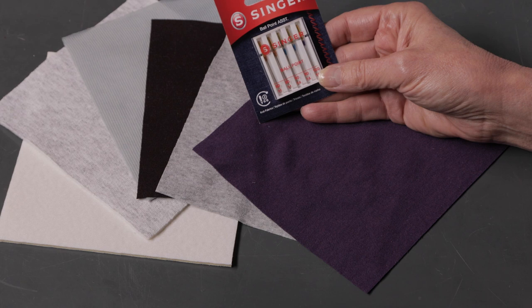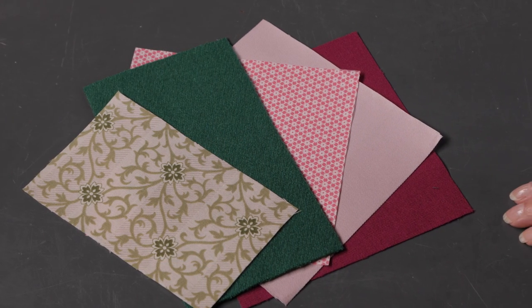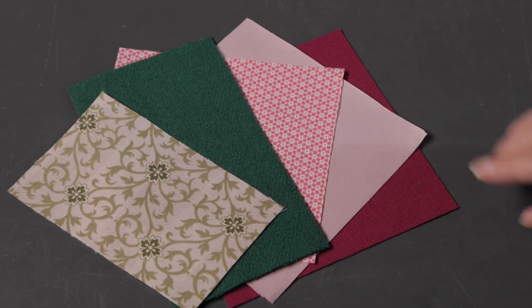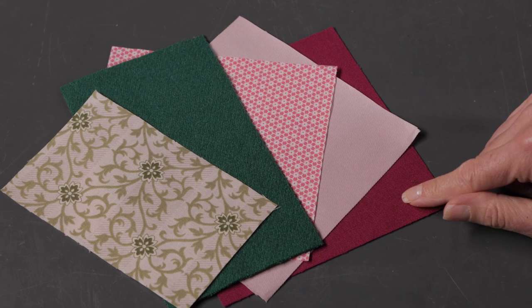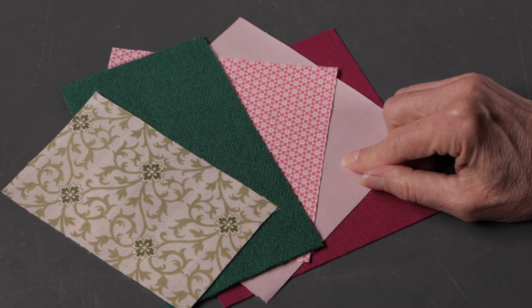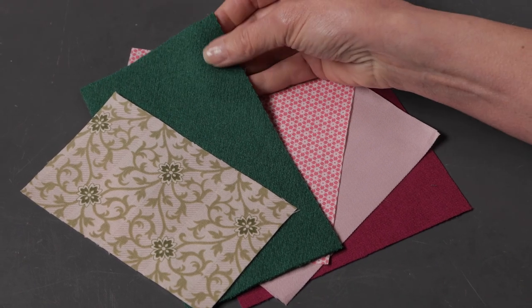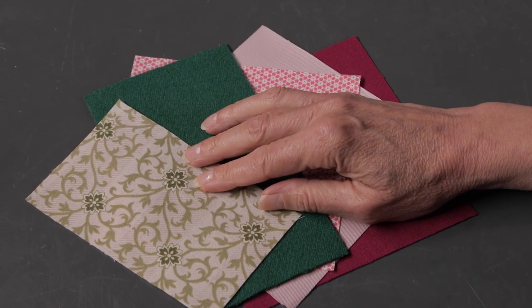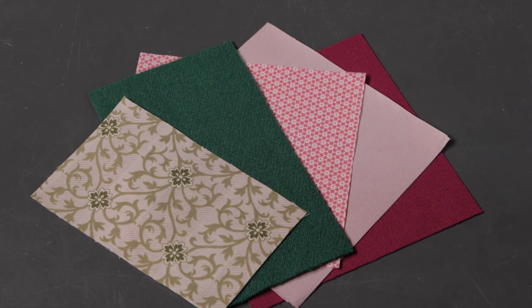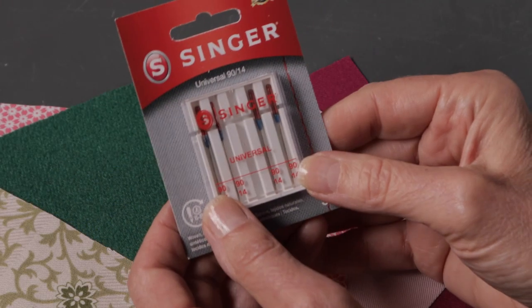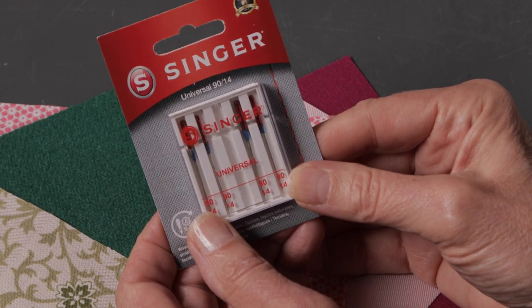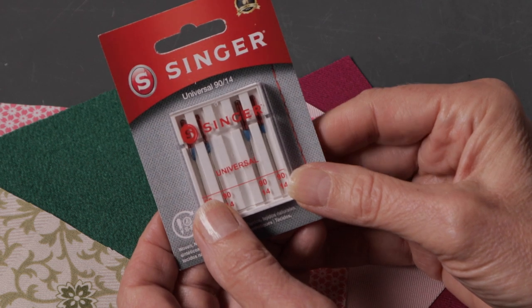Here are some examples of non-stretch fabric: here I have a wool, a bottom weight cotton, a quilting cotton, cashmere, and rayon. For these types of fabrics you're going to want to use a universal needle, and a universal needle you'll know by this red color at the top of the needle.